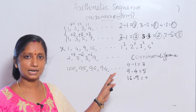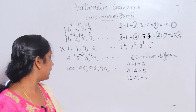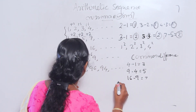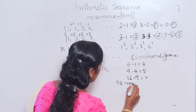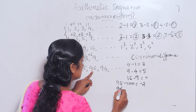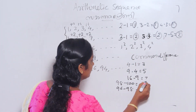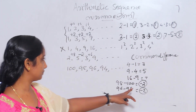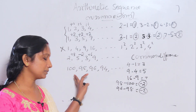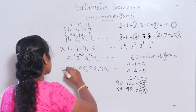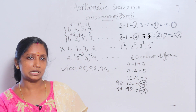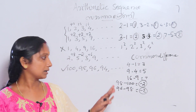Here is another sequence: 100, 98, 96... 98 minus 100 is minus 2, and 96 minus 98 is also minus 2. The difference is common — negative 2. So this is an arithmetic sequence. You can see the common difference in the same way.